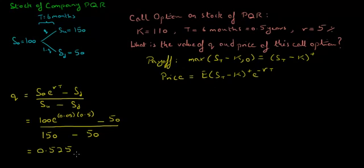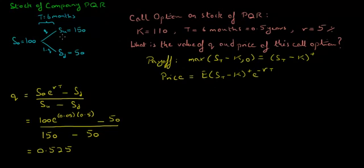So the risk-neutral probability of the stock price going up in six months is 0.525. Now that we know Q, let's calculate the payoff of this option in each state. If the stock price goes up to 150, the call option will be in the money, as 150 is greater than the strike price of 110. Based on the payoff function, the payoff of this option is 150 minus 110, which is 40.